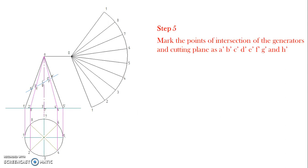Next, mark the cutting points A dash on the generator O 1 dash, B dash on the generator O 2 dash, C dash on the generator O 3 dash, and similarly B dash, E dash, F dash, G dash and H dash on the corresponding generators.